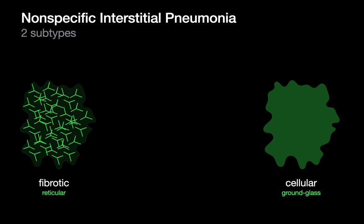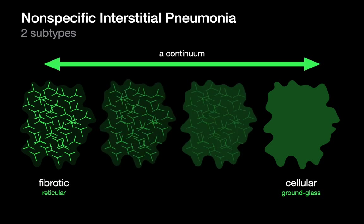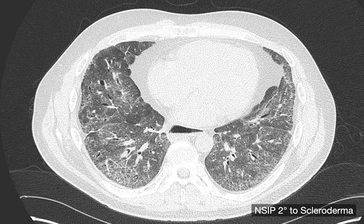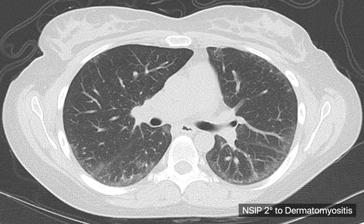NSIP has two subtypes: a fibrotic subtype that looks very reticular and a lot like UIP, and a cellular subtype that is predominantly ground glass. These two subtypes exist on a continuum rather than a binary arrangement, so you'll see people with mixes of both fibrotic and cellular. Examples show a reticular interstitial pattern that's very fine with some ground glass in an NSIP patient, or cases with more ground glass and very little reticular interstitial pattern. We may also see subpleural sparing in some NSIP patients.